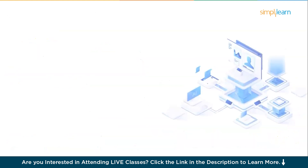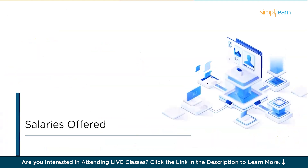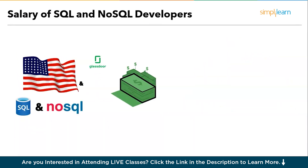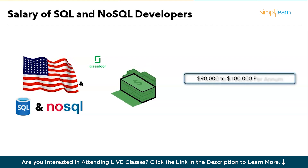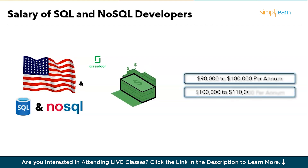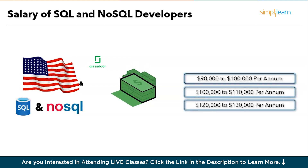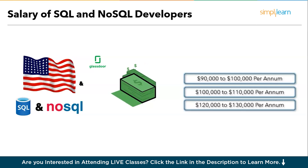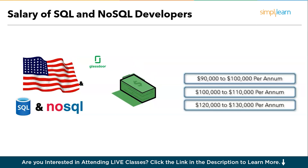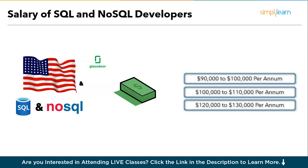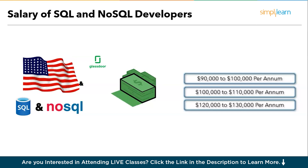Let's discuss the huge paychecks being offered to certified SQL and NoSQL developers. If you are in America, as a beginner in database management, they are ready to offer salaries from $90,000 to $100,000 per annum. If you're an intermediate candidate with about one to two years of experience, you can expect salaries ranging from $100,000 to $110,000 per annum. And if you are a highly experienced candidate with four, five, or more years of experience, you can expect salaries ranging from $130,000 or even more based on the company and project.